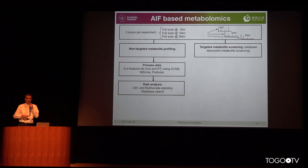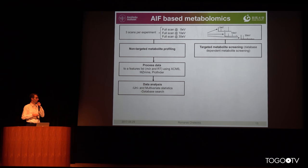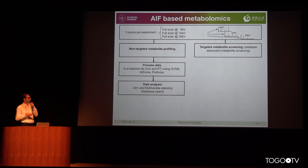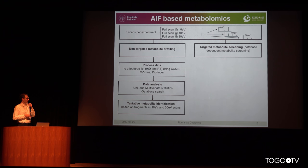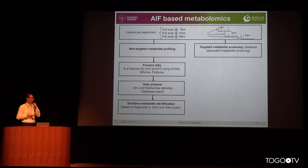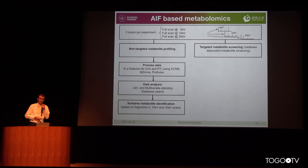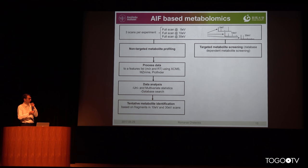Then we perform data analysis based on our scientific question — differences between groups or time profiles. After identifying interesting or relevant features, we do a database search based on the mass match to suggest what metabolite it could be. Then using fragment data in MassBank, we look for those fragments in the 10 and 30 electron volt scans, getting closer to the name of the metabolite.